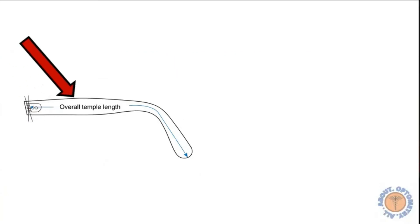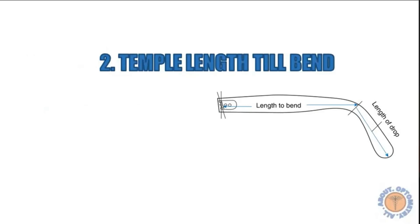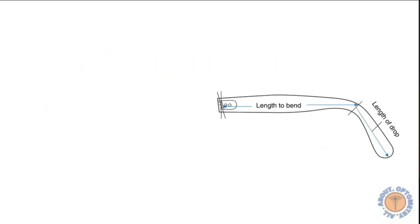The second more common method that we talk about is to measure the temple length till the bend. This is an older method and in terms of usability it's not really used that much, but nevertheless this system makes the measurement from the screw hole center till the center of the temple bend and then the distance between the temple bend till the end of the temple is measured which is called the length of the drop.